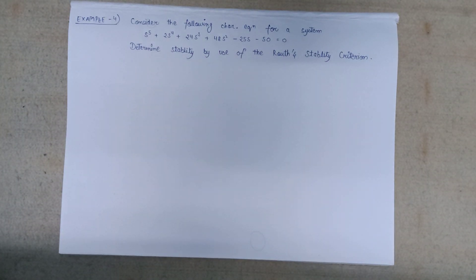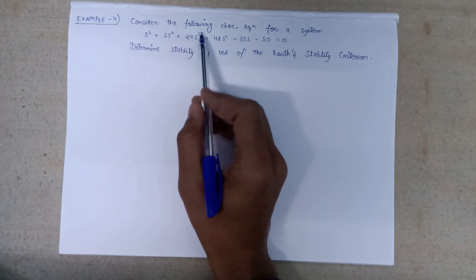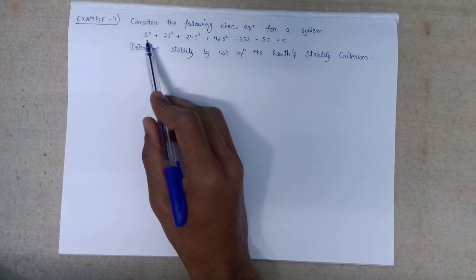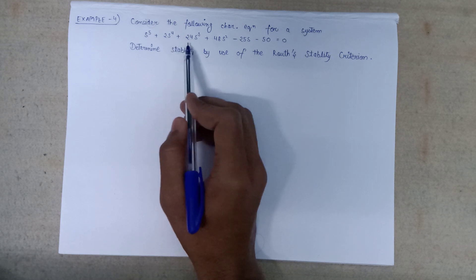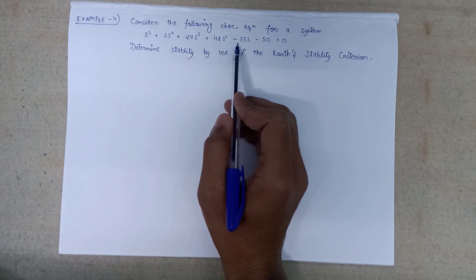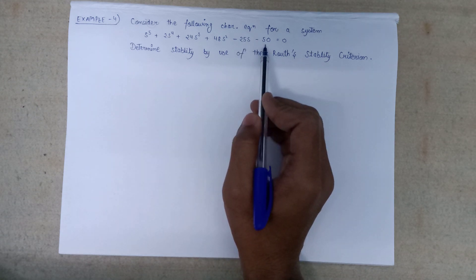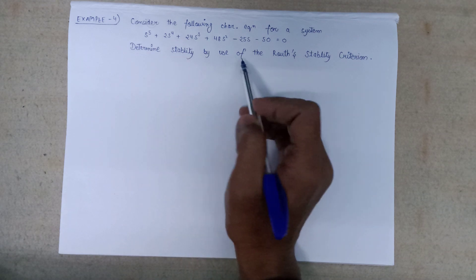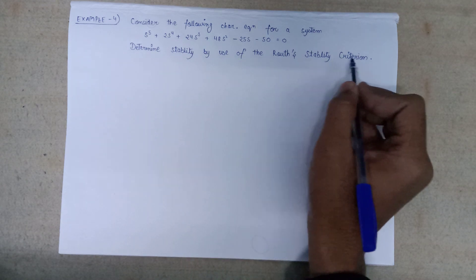Welcome all. In this lecture we are going to solve one more example on the Routh-Hurwitz criteria. This is example number 4. Consider the following characteristic equation for a system: s to the power 5 plus 2s to the power 4 plus 24s cubed plus 48s squared minus 25s minus 50 equals 0. Determine the stability by use of Routh's stability criteria.